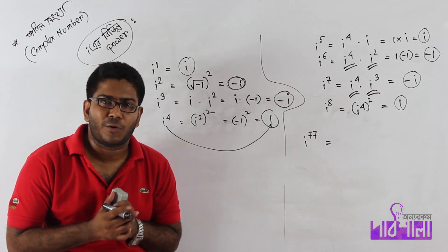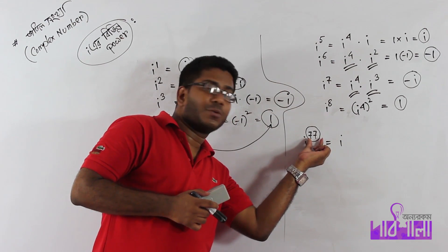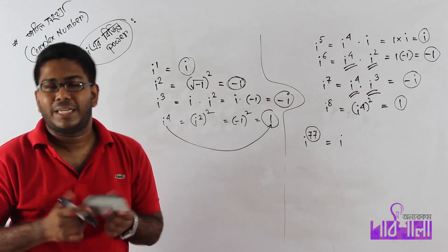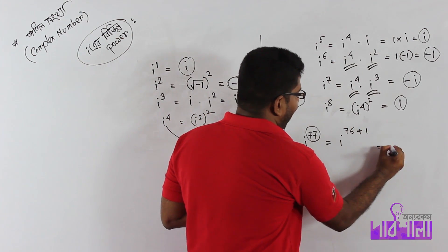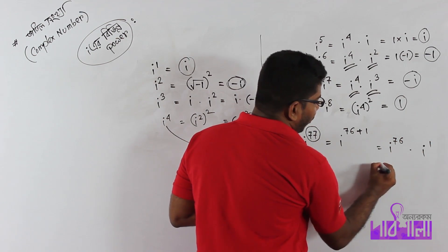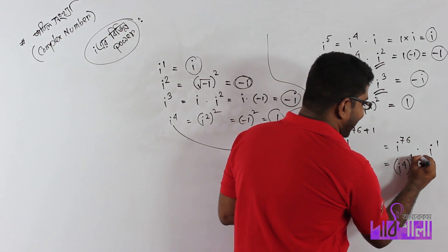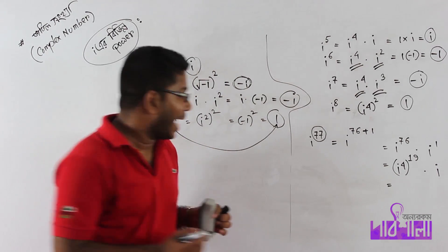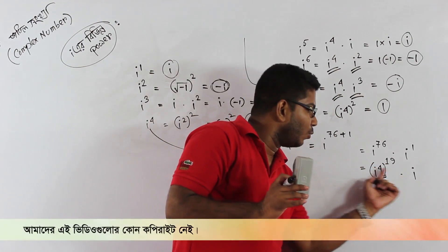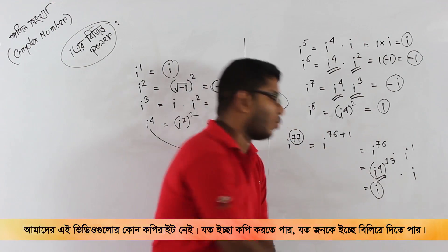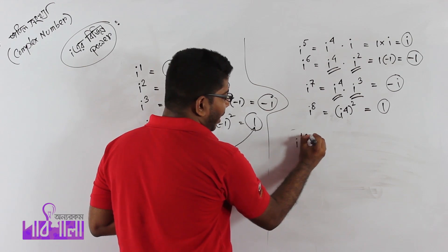Now, you can say that you have to find i to the power 77. The number is 77. How many times does 4 go into 77? You can write 76 plus 1, and separate them. Ultimately your result will come. So i to the power 77 equals i. This will show you the same thing to say i to the power 102.